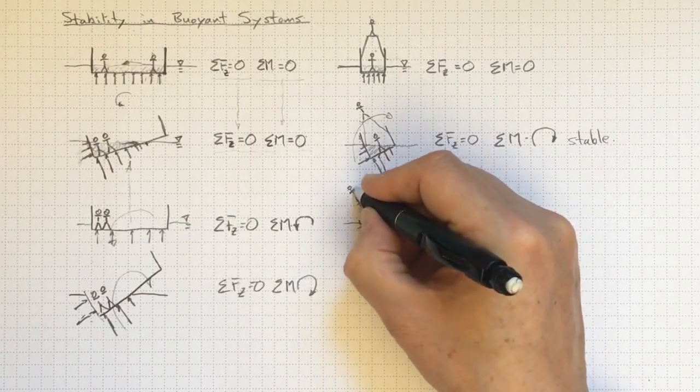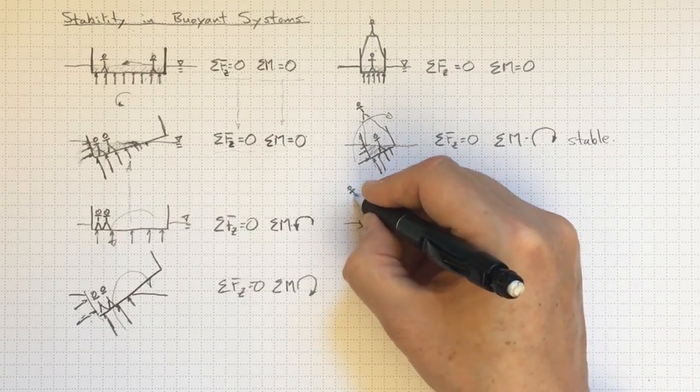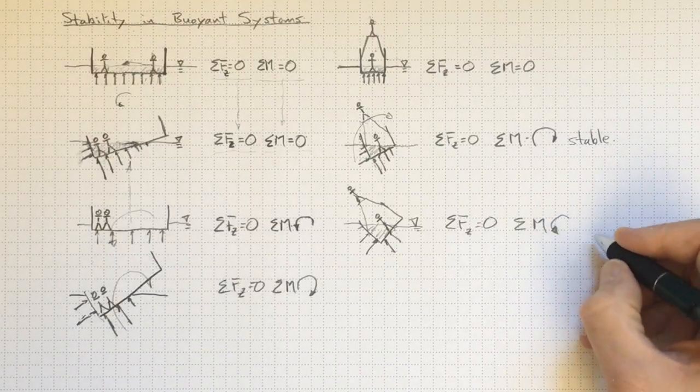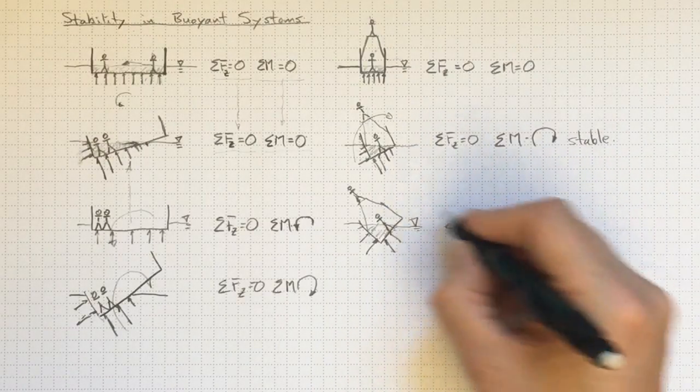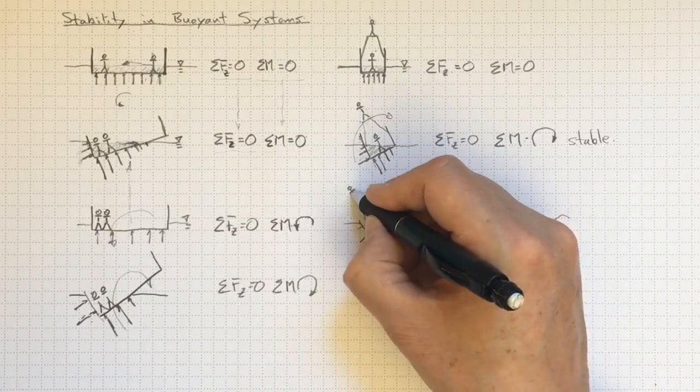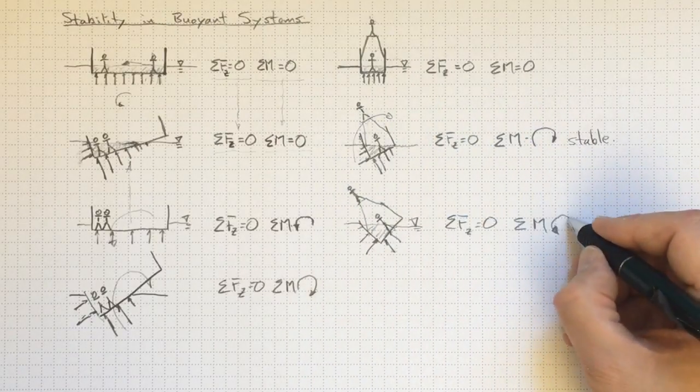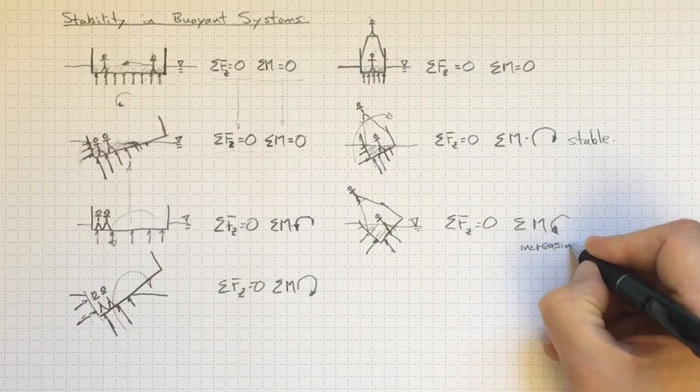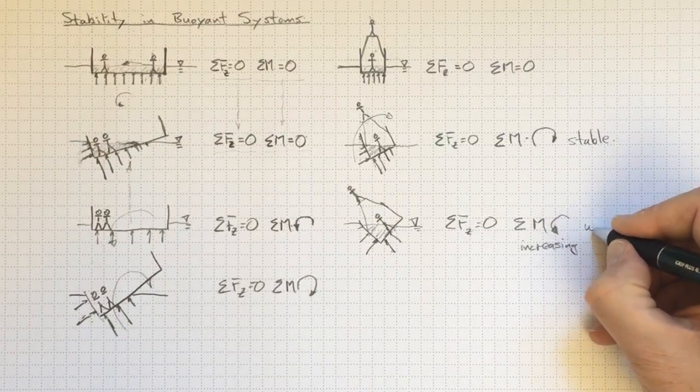But now I've got a sum of the moments. If I add up all of the moments from the pressure forces and from you, and from me and from you up here on top, I've got a situation like this. So I've got a moment that's going to tend to tip me over further. And as I tip over further, you're moving further outboard. The moment's increasing. So here we have a situation that's fundamentally unstable.